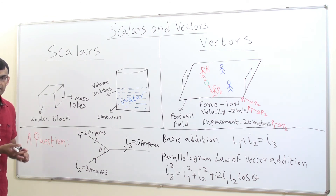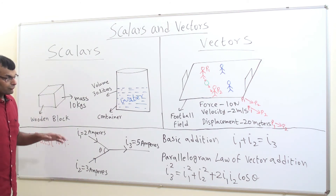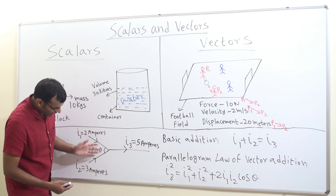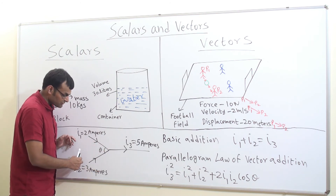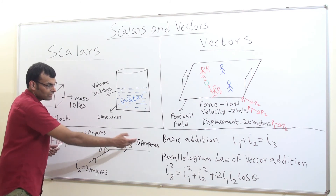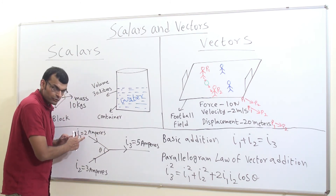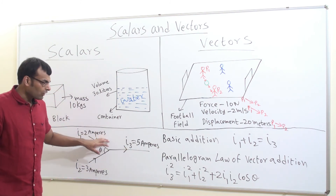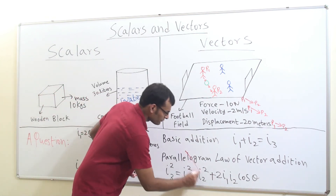Let's look at an example to explain this. Consider two wires making an angle theta among them. A current of 2 amperes passes through wire one and 3 amperes through wire two. The resulting current through the combined wire would simply be 5 amperes by basic addition. Each current has a magnitude and is going in a direction — but can we call current a vector? We cannot.